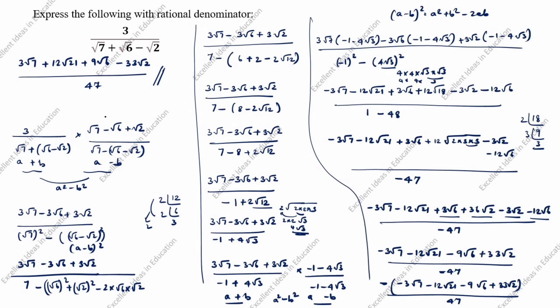This is the second method answer. The first method answer and second method answer are the same. In the first method we took root 7 plus root 6 as 'a' and root 2 as 'b', while in the second method we took root 7 as 'a' and root 6 minus root 2 as 'b', but the answer is the same for both methods. Thanks for watching this video.